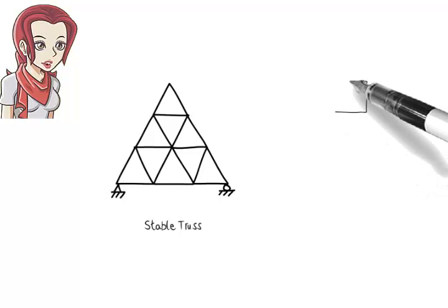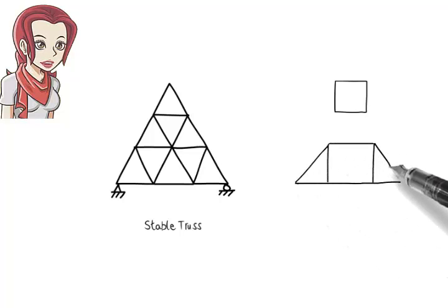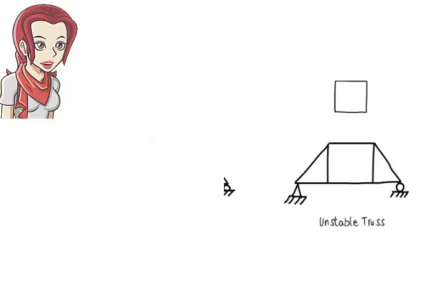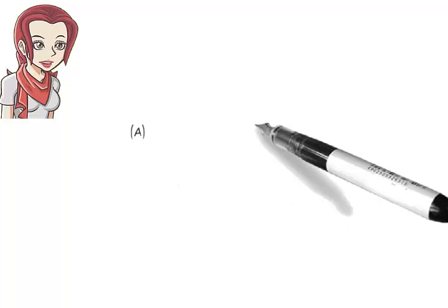Here is one such pattern. Any truss structure that embodies this rectangular pattern is considered unstable. See if you can figure out which of the following trusses are unstable.